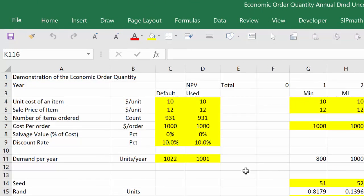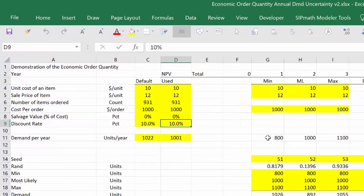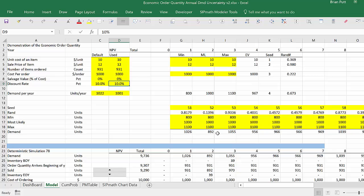Okay, here's our model. We have the unit cost and the unit sale price. That gives us the margin of two. We have the number of items ordered here of 931. The cost per order of 1,000. There's not going to be any salvage value. We have a discount rate of 10. And the demand per year here is shown as a minimum of 800, a maximum of 1,100, and most likely of 1,000. We're then going to take this distribution, which applies to every year, and come up with a different answer every year for the demand. So in year one, in this particular simulation, it's 1026. In year two, it's 892, and so forth and so on. I can look at different simulations. This little tool here will change the simulations. You can see how those are changing over time.